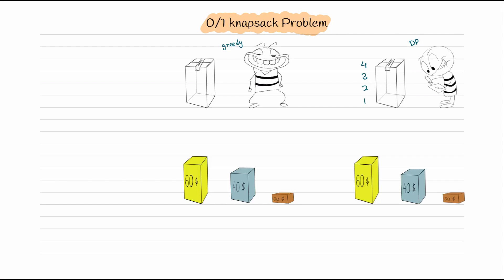They want to rob a building. Their plan was to disguise themselves as garbage collectors, go in with their bags, put some items inside, and leave. The constraint is they can't take anything in their hands — they can only take things that will fit into their bags. The bag size is the constraint, and their goal is to get maximum benefit.